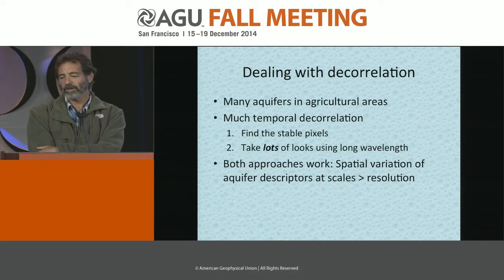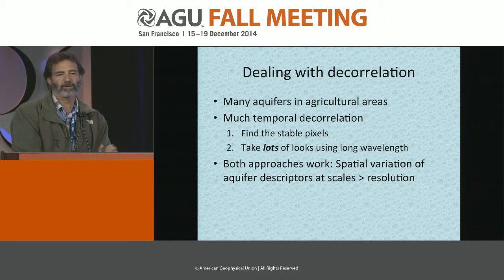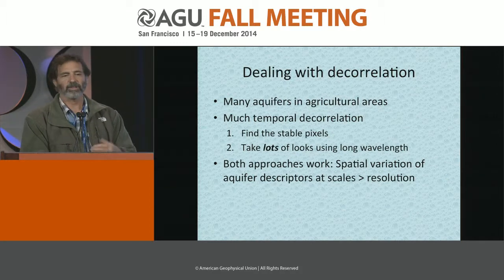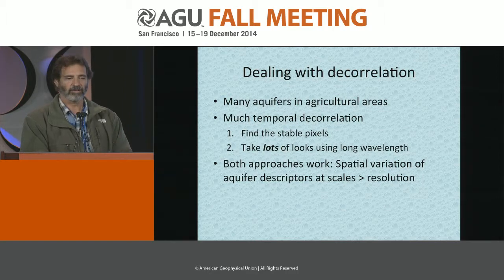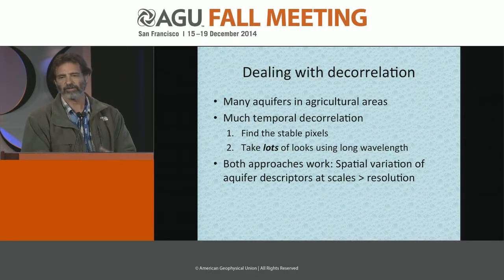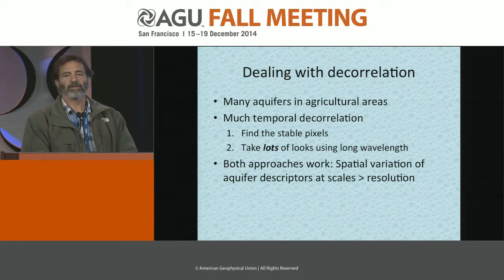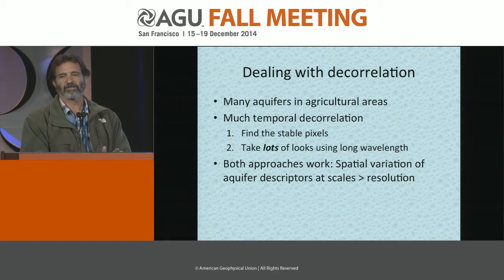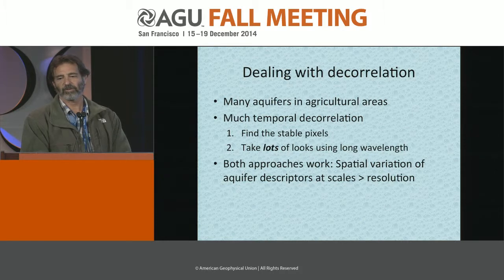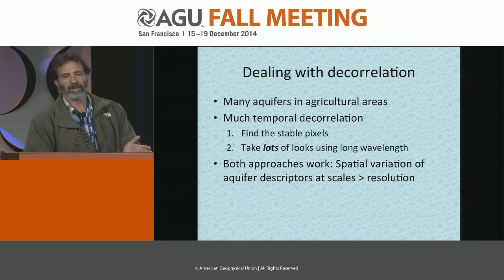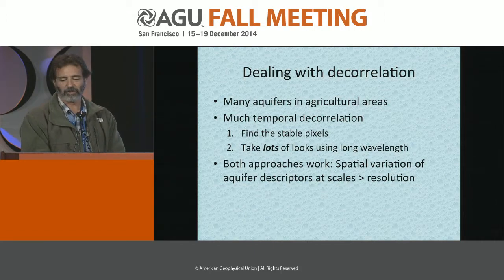There are a couple of different ways to deal with temporal decorrelation. One is to find the pixels that don't decorrelate — this method is called persistent scatterers, and it's a good way to find some good points even if the general area decorrelates a lot. The other approach is that even though it decorrelates a lot, if you take enough looks and average enough measurements together, you can still get a pretty good phase measurement. Both methods work and each has advantages.